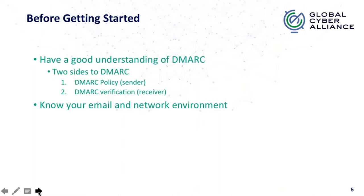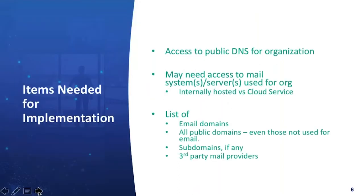Two components are required for DMARC to work: your email system and your DNS — Domain Name Service. You need access to your public DNS for your organization. In most cases there will be an internal DNS system and an external DNS system. The external system is the one the public can access to get information about your domain — your mail servers and similar records. That's where the DMARC policy is going to be applied.